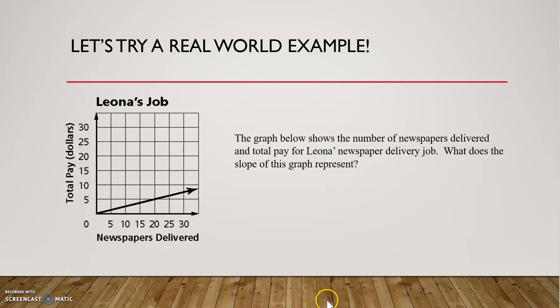Well, let's go ahead and look at what the graph is telling us. We see that on the x-axis, that's the number of newspapers delivered. On the y-axis, that's the total pay. So remember, slope is rate of change. What is this rate of change telling us?